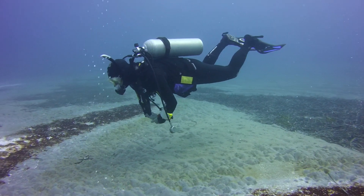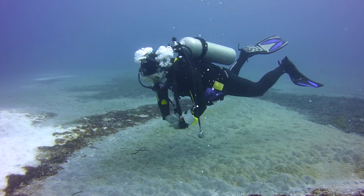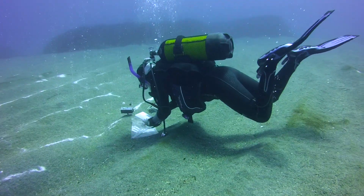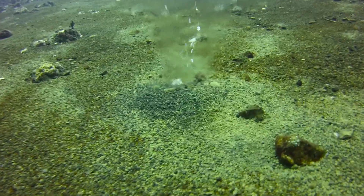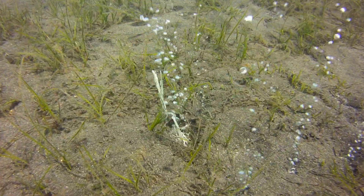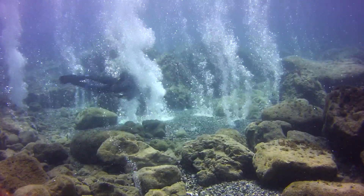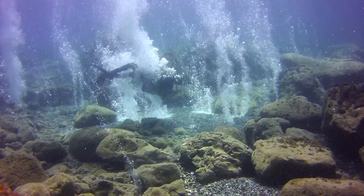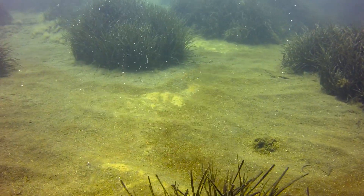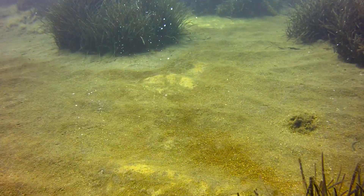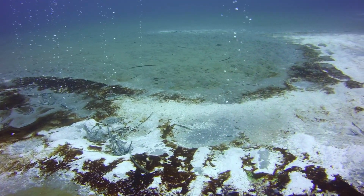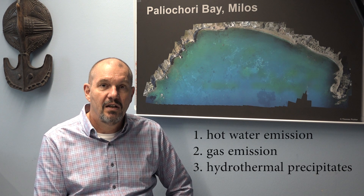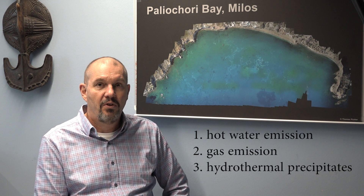We are going scuba diving to explore and study such systems. In general, what we see is hot water slowly coming out of the sediments. We find gas bubbles, small streams, big streams of gas, and we also find hydrothermal precipitates — minerals that fall out of the hot water and form deposits on the seafloor. These are generally the three different features associated with shallow water hydrothermal activity.